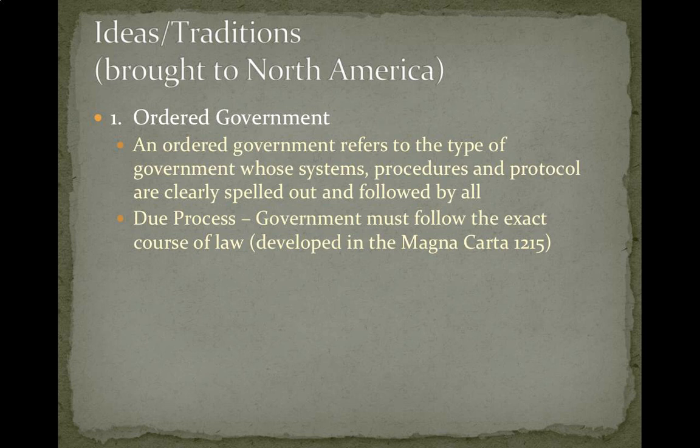This first idea of due process was really developed by the Magna Carta in 1215. The Magna Carta is a document that the king at that time was forced to sign. Before it, the king was able to do whatever they wanted — arresting people, putting them in jail without charging them with a crime. There was no rhyme, reason, or process they had to follow. Very early on, we established the idea that government should not be arbitrary and that people should know exactly what the rules are.